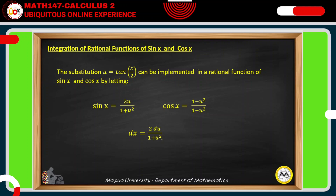Another technique of integration is the integration of rational functions of sine and cosine. In this method, if the integrand contains a rational function of sine and cosine, we make use of the substitution u equals tangent of x over 2, and then using the double angle identities, we can derive: sine x equals 2u over 1 plus u squared, and cosine x equals 1 minus u squared over 1 plus u squared.